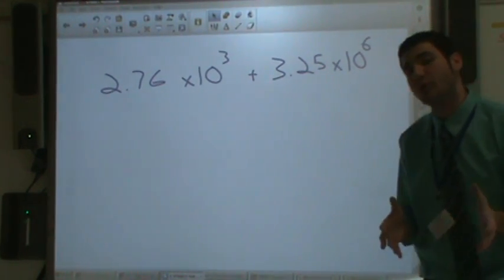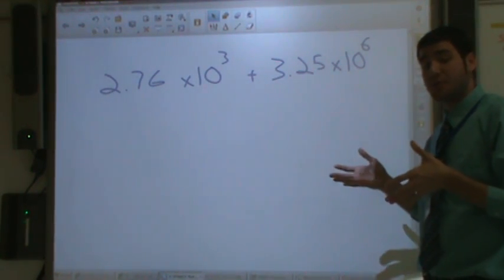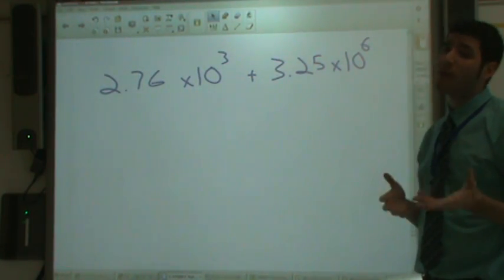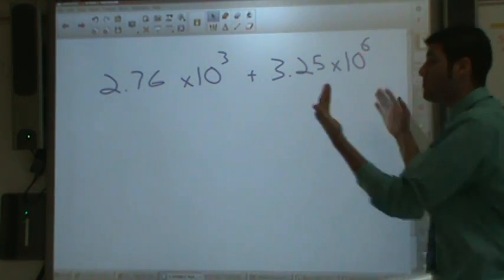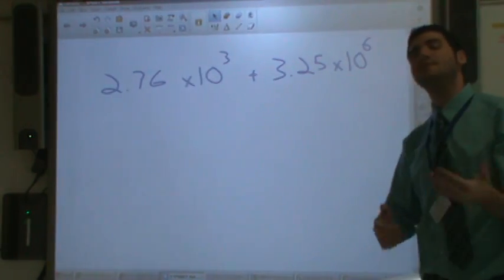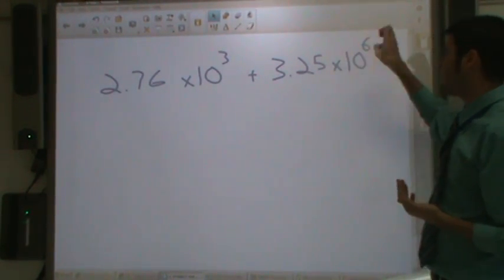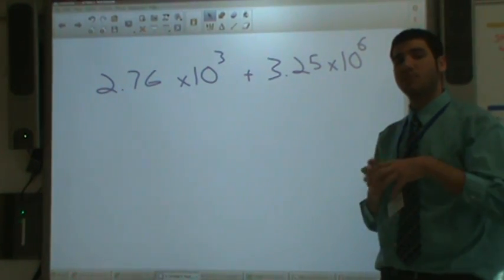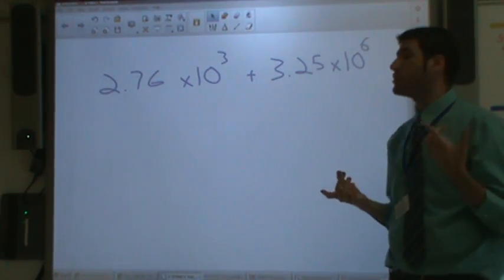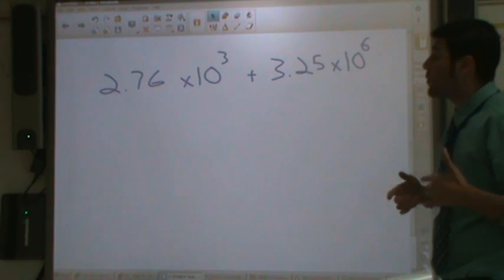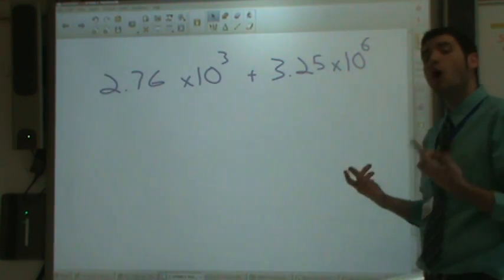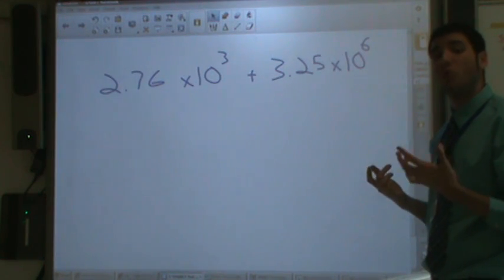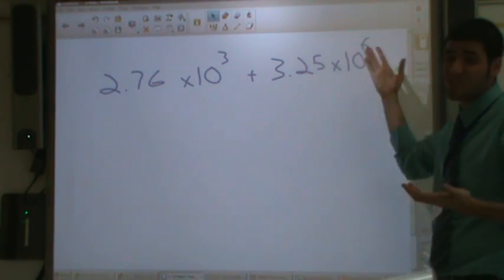So we have an addition problem here. In order to do this, we have to make sure that we have the same exponents. Same base with the same exponent. Now right now we have the same base, which is good. We have bases of 10, but we don't have the same exponents. This one's got an exponent of 6. This one has an exponent of 3. So we want to get them to have the same one. Now which one? Do we want to get them to both be 3, or both be 6? You always pick the higher one. So in this case, we're going to try to get them both to be 6, because 6 is higher than 3.